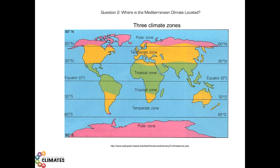Geographers and climatologists divide the surface of the Earth into three large climate zones. A tropical zone ranges from 30 degrees north latitude to 30 degrees south latitude.